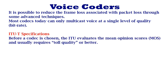Regarding ITU-T specifications, the ITU has a rigorous process for approving vocoders. Before a codec is chosen, the ITU evaluates Mean Opinion Scores (MOS) and usually requires toll quality or better, where toll quality is defined in G.726 via RFC 2422.